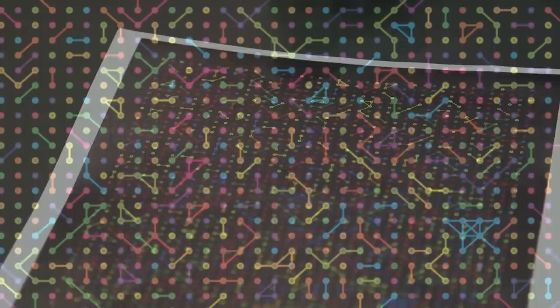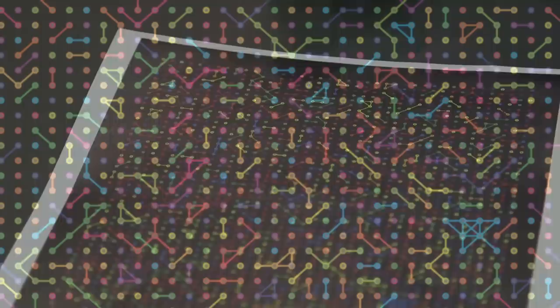He took that a step further and started to colour the centre of the circles using the colour of the next digit, just to make it a little bit prettier. But then he found it interesting to join up digits that had the same colours — adjacent digits in the poster that have the same colour, meaning the same number. This creates these disconnected networks.